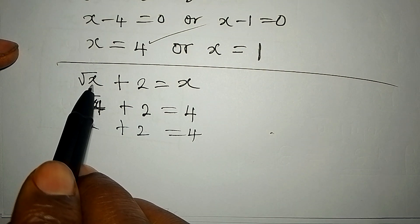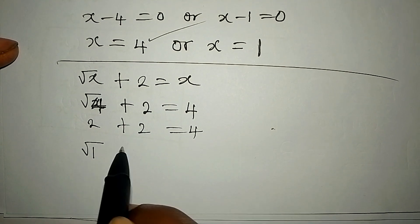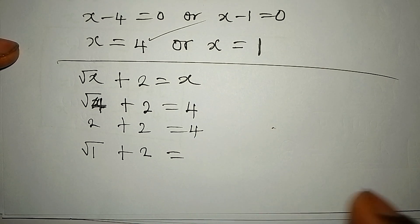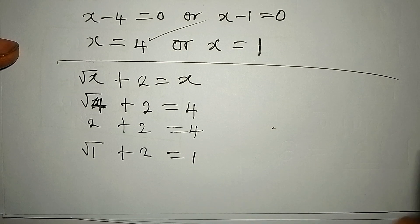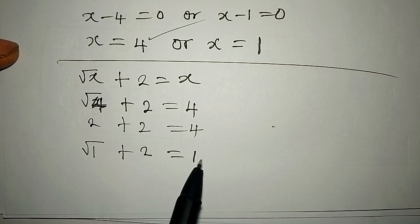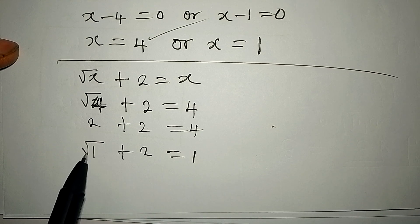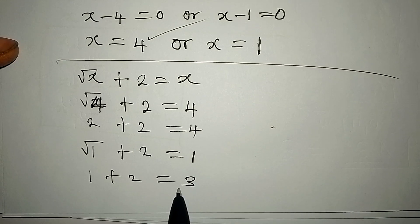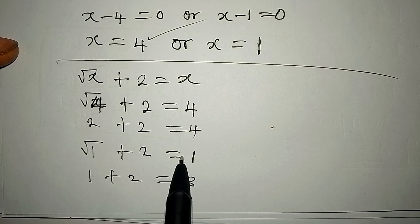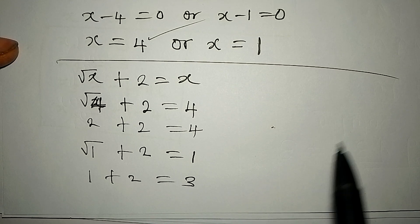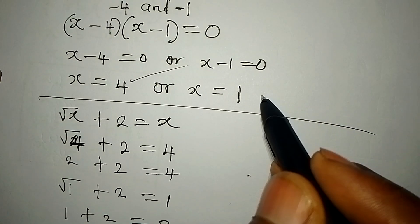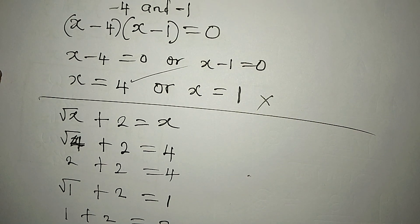If we put x as 1, then we have square root of 1 plus 2, and on the other side x is 1. No way this will be equal to 1 because square root of 1 is 1 plus 2 and it should be equal to 3. And it's not 3 we had on the other side. So this means that this value of x, which is 1, is not satisfying the equation.